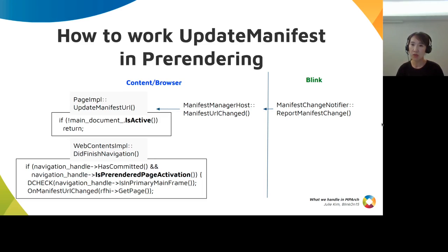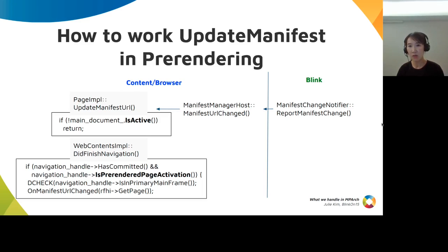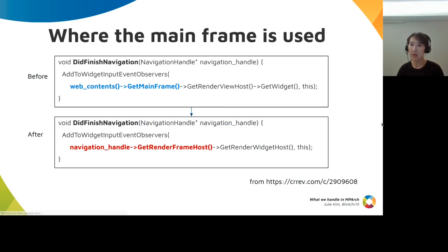Previously, updating manifest worked like this: Blink recognized that the manifest is updated and calls a mojo interface to the browser. Once the browser gets the notification, it sends the notification to all observers. After NPRs, it's been changed so that after the browser gets the notification, it checks if the document is active or not. Since only the primary document is active, if the page is in pre-rendering, it returns and skips sending the notification. After that, when the pre-rendered page is activated, it handles the manifest.